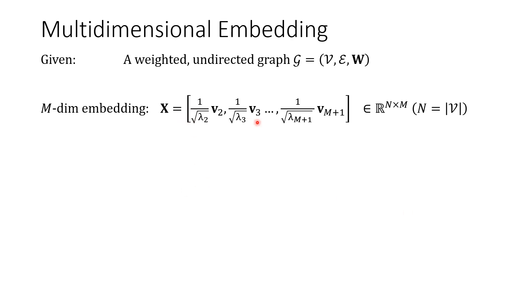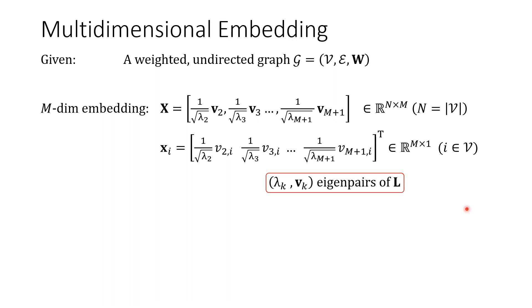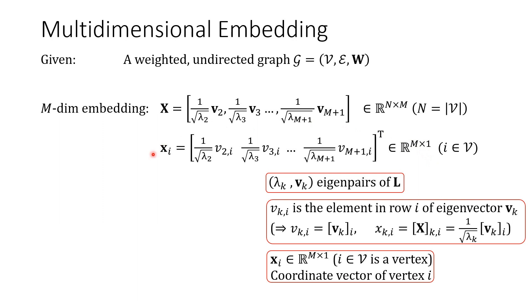Here is the expression that we use. x is the matrix of coordinates and each row of x when transposed gives this vector xi. Each lambda and v is an eigen pair of L, and vk is the element in rho i of eigenvector vk. The xi is an n by 1 coordinate vector of vertex i.